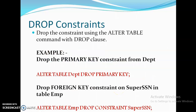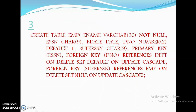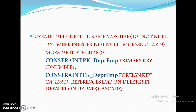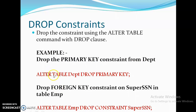To drop constraints, you use the DROP command. To drop the primary key constraint from the department table: ALTER TABLE department DROP PRIMARY KEY. D_number is the primary key of the department table, so this command removes it.